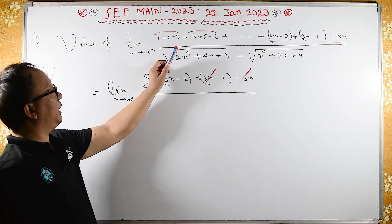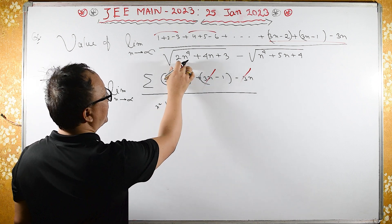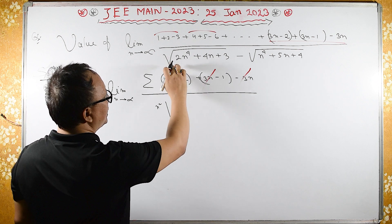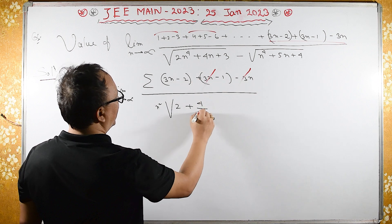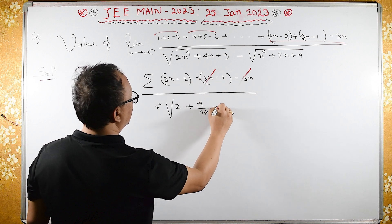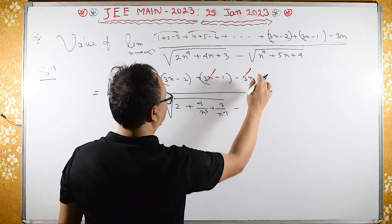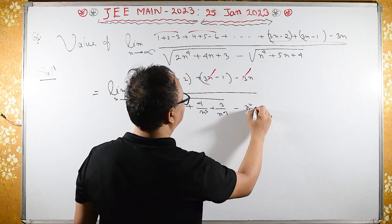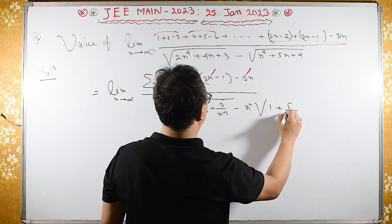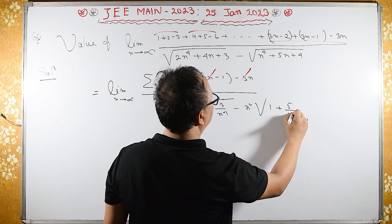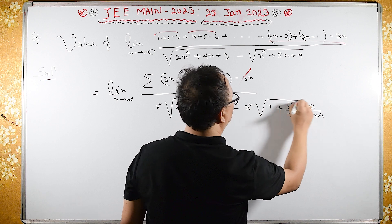Now if I take n square outside, so if I take n square outside, I have to send n raise to 4, I have to divide n raise to 4, so 2 plus 4n cube plus 3 upon n raise to 4 minus, here I will get n square, n square root of 1 plus 5 upon n, here I will get n cube plus 4 by n raise to 4.